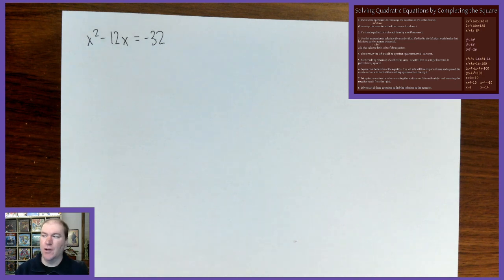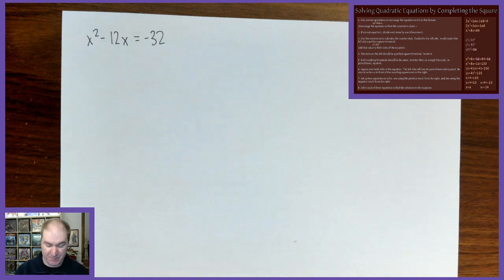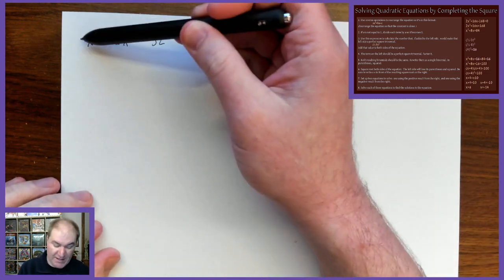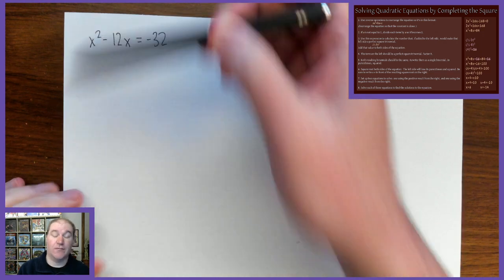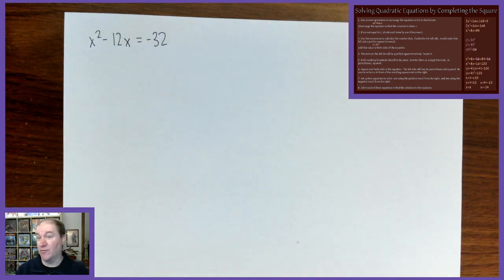Step two: if a is not equal to one, divide each term by a so that it becomes one. Remember a is the coefficient in front of x squared. In this problem a is already one, so we can move on to the next step.